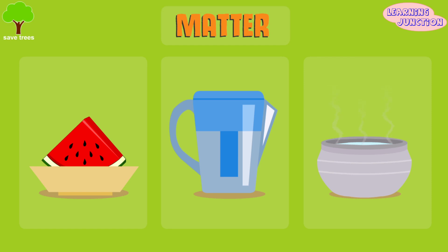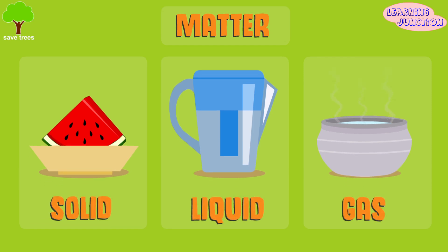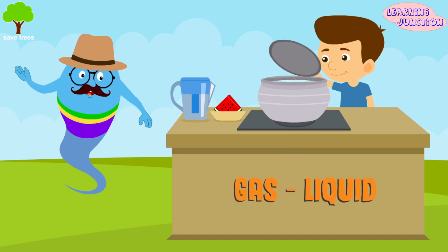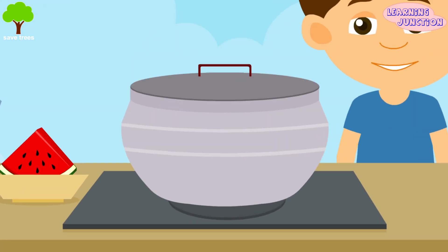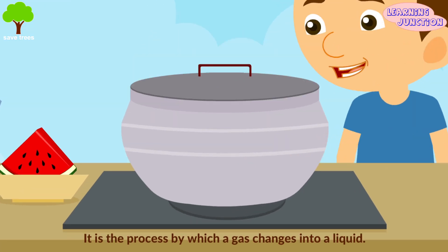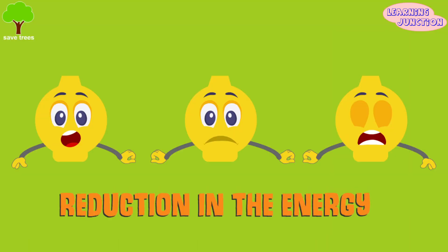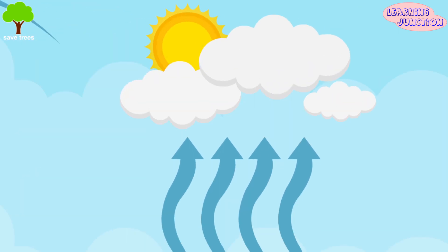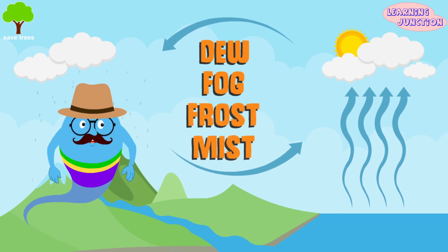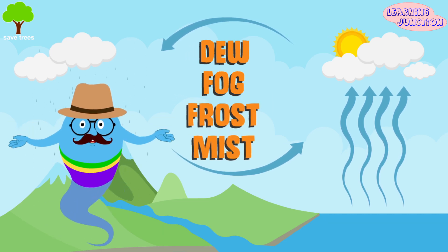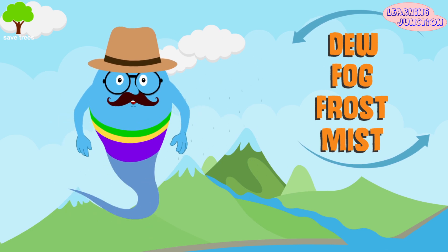Matter exists in three states: solid, liquid, and gas. If we cool a gas, it becomes a liquid. This process is known as condensation. It is the process by which a gas changes into a liquid due to a reduction in the energy of its particles. Condensation happens when the vapors in the air become cold. When the vapor gets cold, it transforms back into a liquid form. Dew, fog, frost, and mist are the forms of condensation. Let's learn about them one by one.